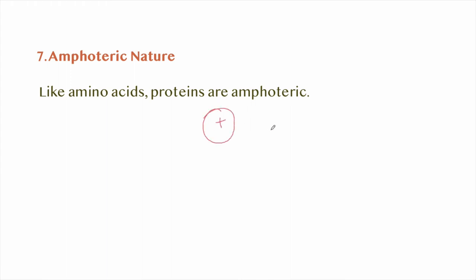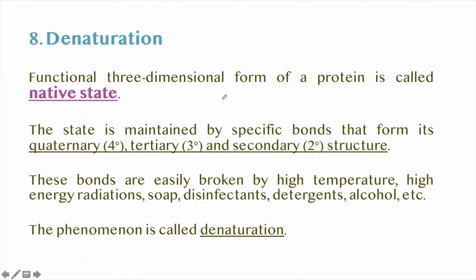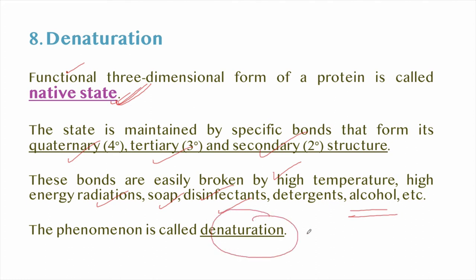Denaturation: the functional three-dimensional form of protein is the native state. This state is maintained by specific bonds that form its quaternary, tertiary, and secondary structures. These bonds can easily be broken by high temperature, high-energy radiations, soap, disinfectants, detergents, alcohol, etc. This process is known as denaturation.